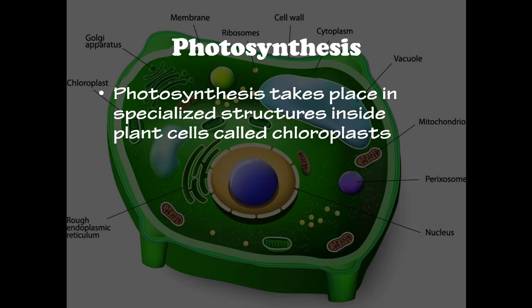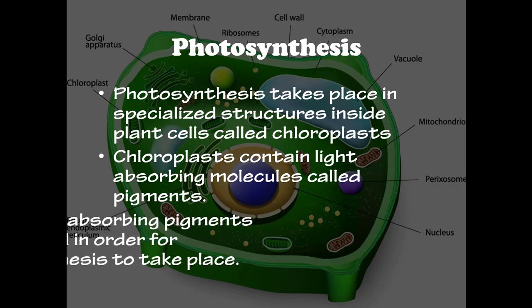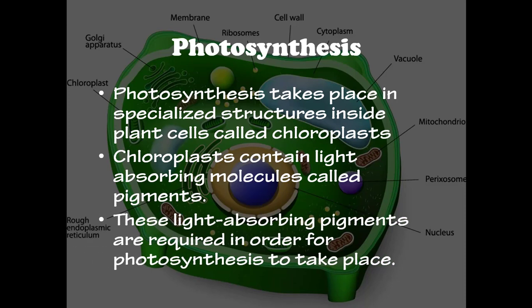Photosynthesis takes place in specialized structures inside the plant cells called chloroplasts. Chloroplasts contain light-absorbing molecules called pigments, which are required in order for photosynthesis to take place.